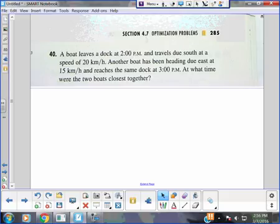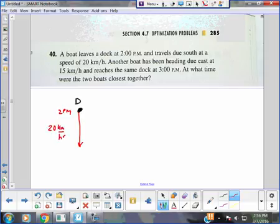So I need a good picture. I'm going to make the dock in black. Here's the dock D. The boat leaves, I'm going to do the boat going south, so at 2 p.m. the boat leaves and it's going south at a speed of 20 kilometers per hour. Now you might be thinking this is a related rate, but it says right here, optimization, so we'll get there in a second.